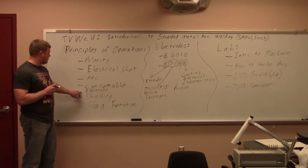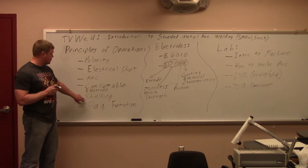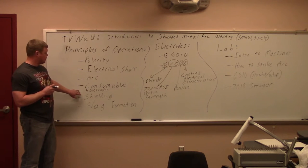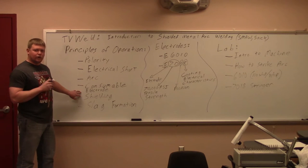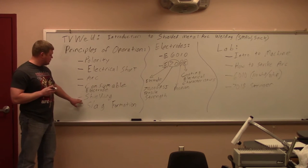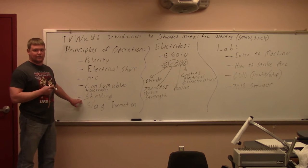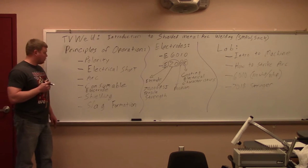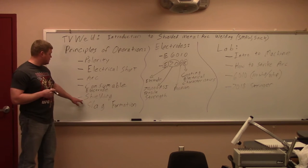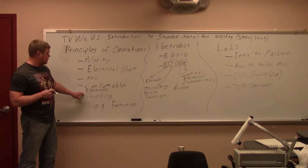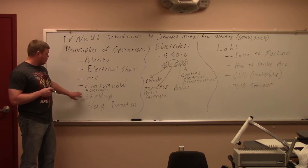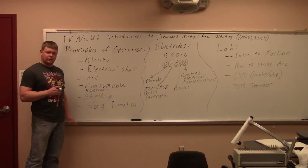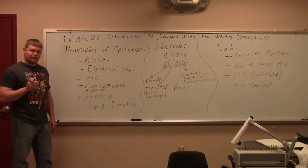It's also going to have a flux on the outside that's going to shield the arc from atmospheric contamination. As this consumable electrode is getting eaten away, the coating on the outside is going to provide a shielding gas so that you don't get the atmospheric contamination, much like with MIG you have argon CO2 mix, or with TIG, just straight argon. The shielding is actually provided from the coating that's on the outside of the consumable electrode. Once the weld has solidified, you have slag formation, so it's going to leave a little bit of slag on the outside of the weld that you have to chip off.